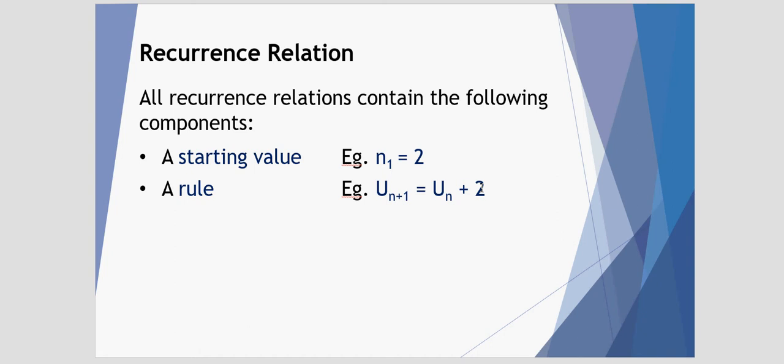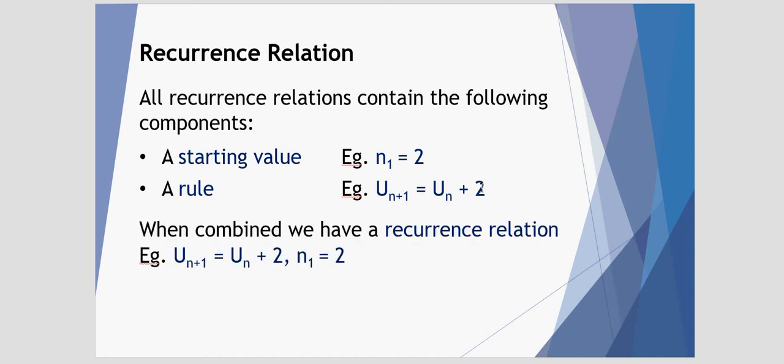When you combine the starting value and a rule together, we have what we call a recurrence relation. So here's our rule and our n₁, our starting value. So the first five terms of this sequence would be, which says we start with 2, then from that 2 we add 2 to find our next term, which would be 4. But then take the 4, we add 2 for our third term to find 6. We enter 6 and we add 2 to find 8 and so forth. So this rule allows us to predict any next value based upon the previous value.